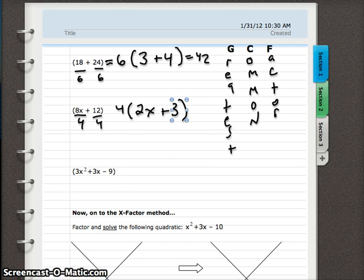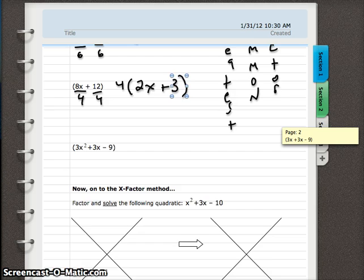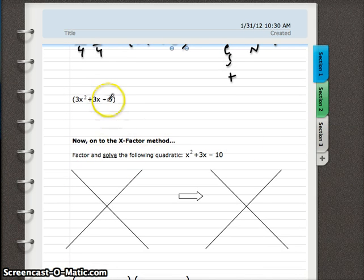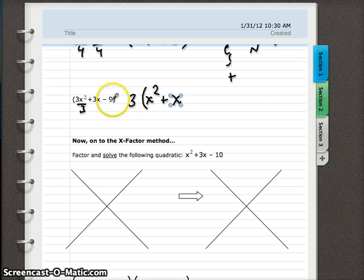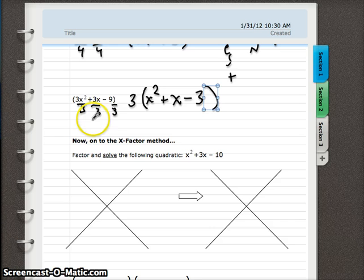Here's the one that's a little more complicated. Here's an actual quadratic. This is where we're going to start factoring. What number goes into all of these? Well, 3. And so we divide each term by 3. 3x squared divided by 3 leaves x squared. Positive 3x divided by 3 leaves x, positive x. And negative 9 divided by 3 leaves negative 3.